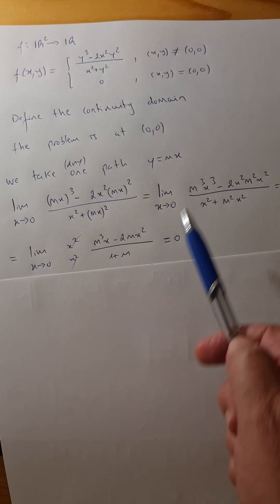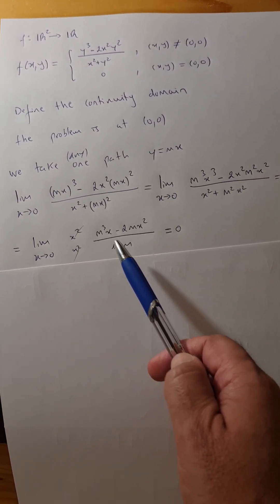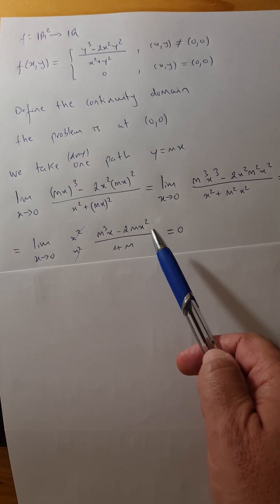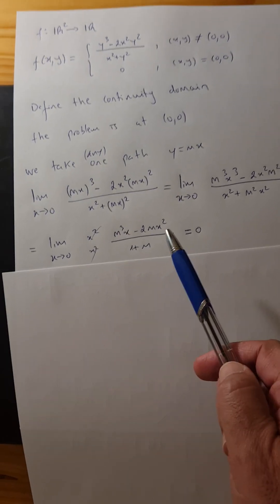I made x the subject, right? And we got this. It will be 0 minus 0 over 1 plus m, so that will be 0.